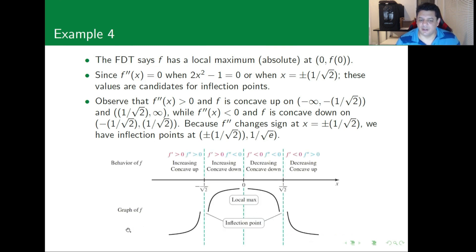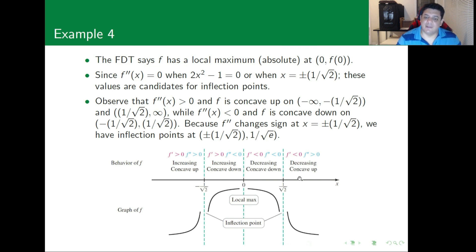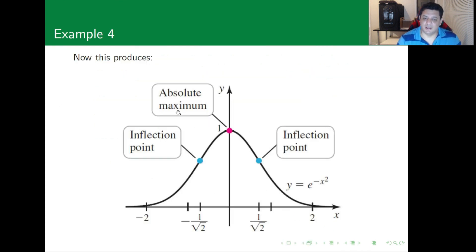Summarizing the behavior: from -∞ to -1/√2 the function is increasing and concave up; from -1/√2 to 0 it is increasing and concave down; from 0 to 1/√2 it is decreasing and concave down; and from 1/√2 to ∞ it is decreasing and concave up. This overall shape resembles a bell curve.